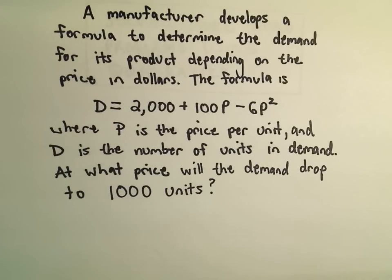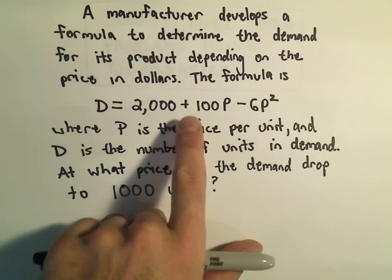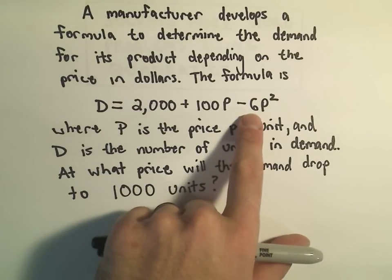In this case suppose we have a manufacturer and they develop a formula to determine the demand for the product depending on the price in dollars for each object. So we get the formula that the demand is equal to 2,000 plus 100P minus 6P squared.